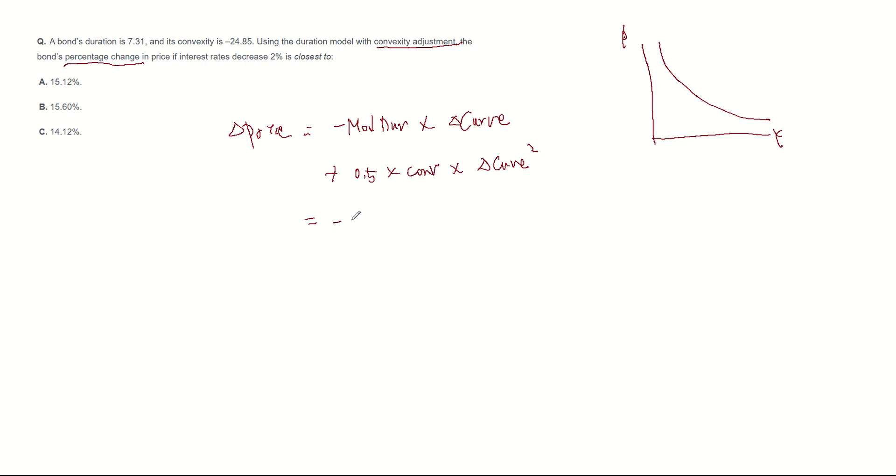Minus duration 7.31 multiplied by yield change of 2% decrease, so minus 0.02, plus 0.5 multiplied by convexity minus 24.85 multiplied by 0.02 squared. Then it becomes 0.1412. So 14.12% price change is expected when interest rate decreases 2%.